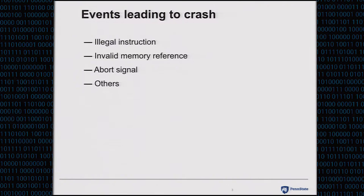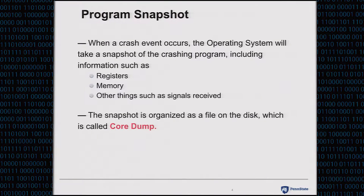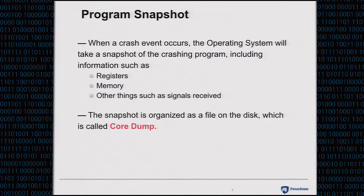So when your program crashes, you probably want to know why and how. You would be wondering if there is anything we can leverage to do post-mortem analysis. The answer is yes. When a crash event occurs, the operating system will generate a snapshot of the questioned program. The snapshot can include information such as registers, memory, and other things like signals the program received. The snapshot is organized as a file on your disk, which is typically called a core dump.